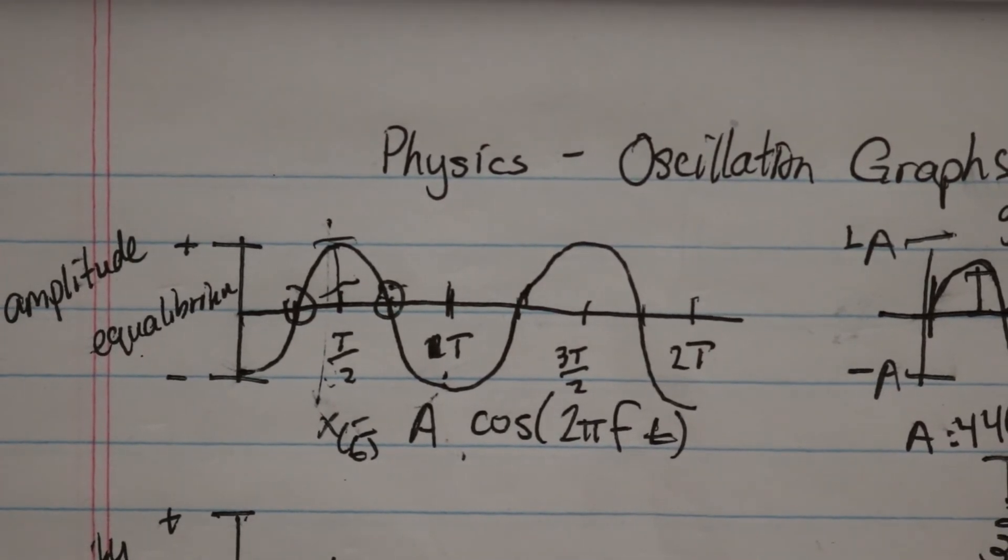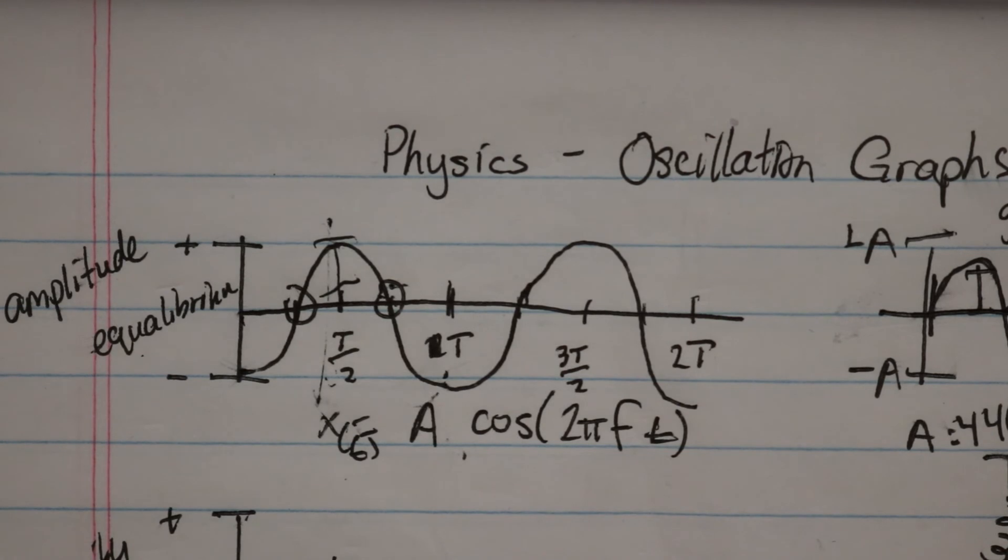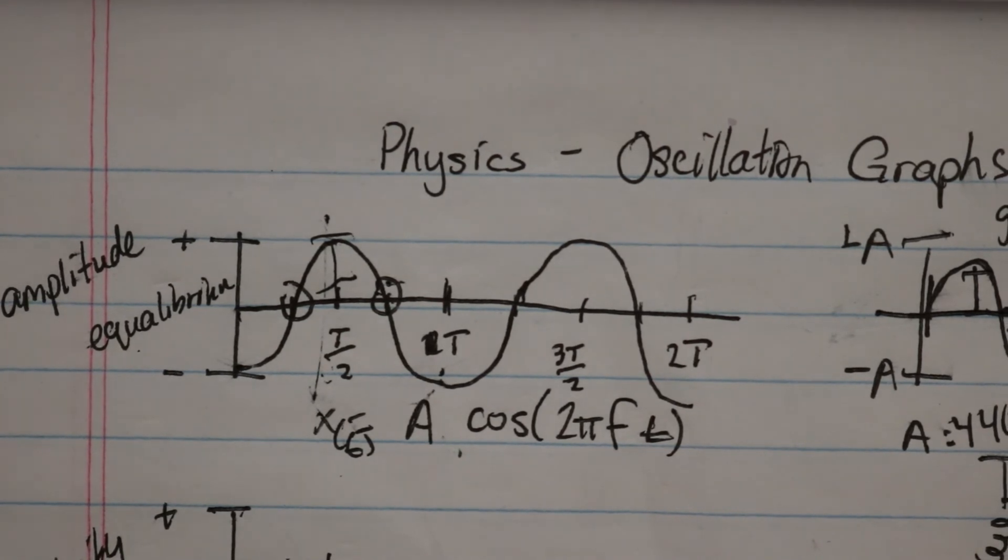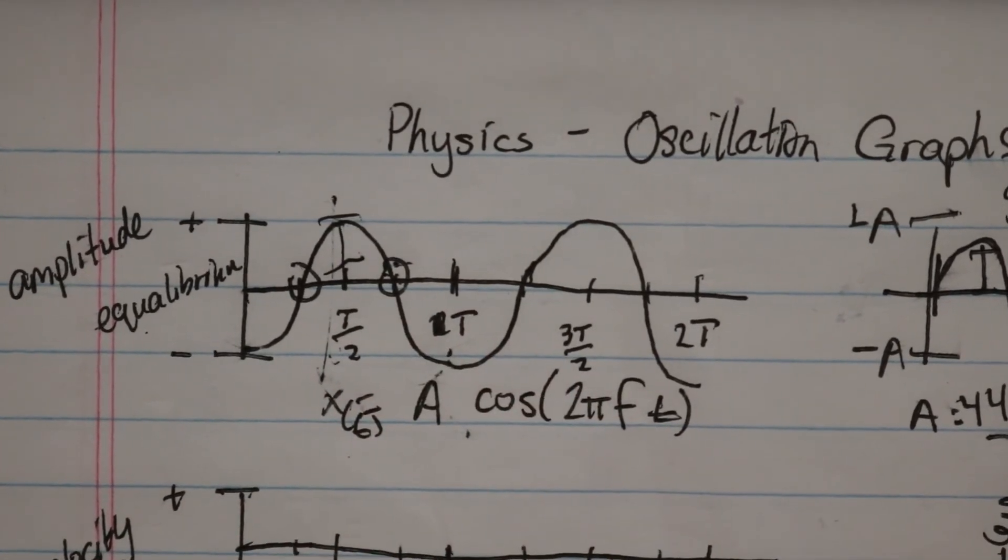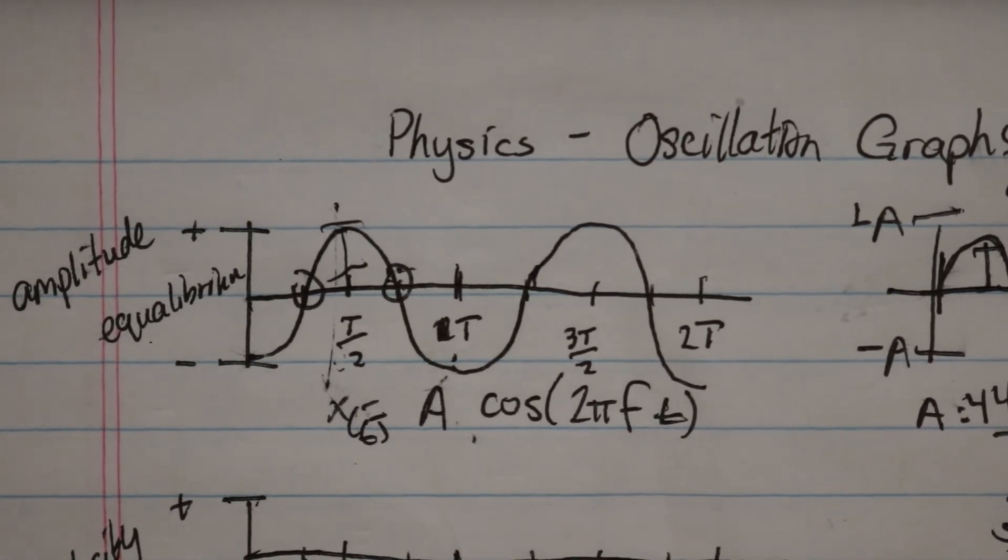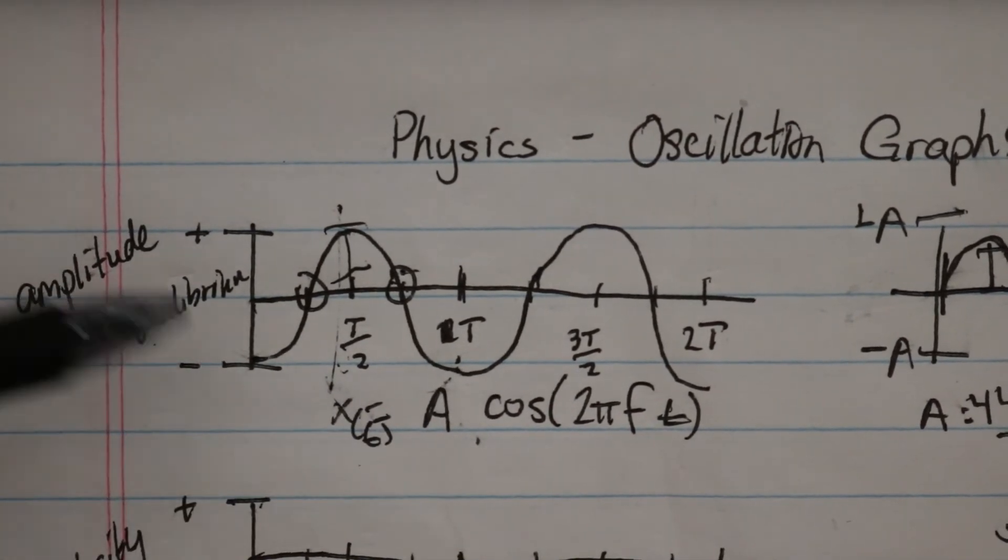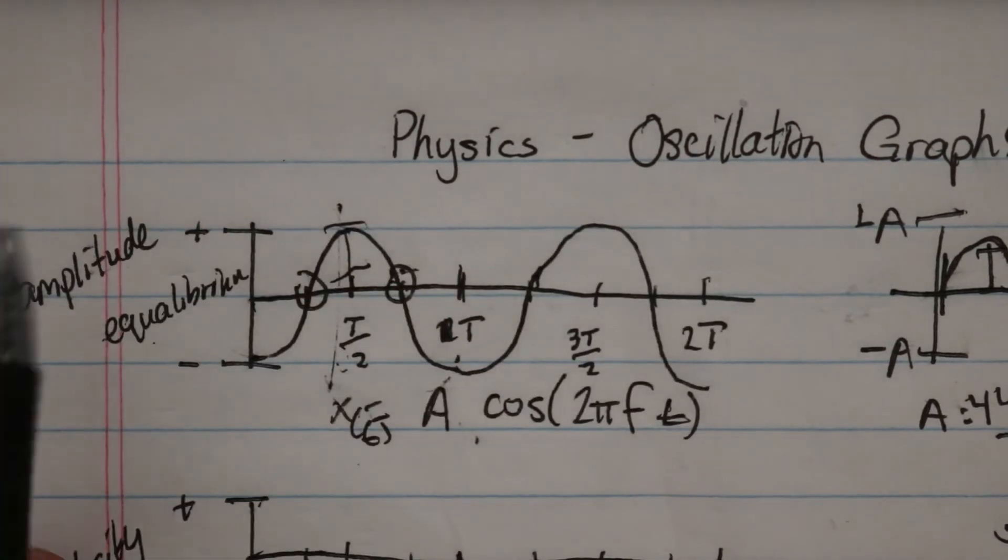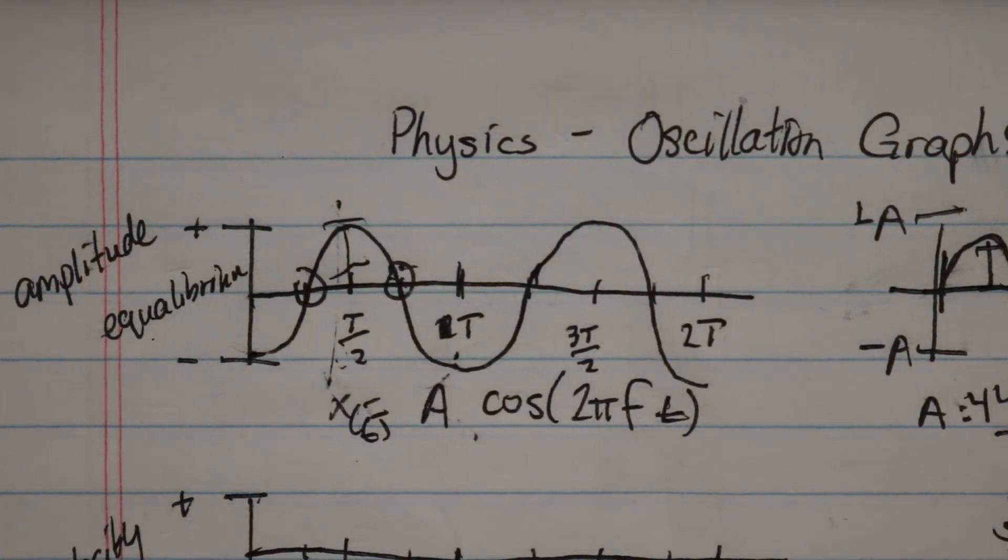But if you want to know at half a second and my period is this, what is it? Well, take your period, flip it over, plug in your frequency, and then plug in your time, plug in your amplitude, run it through your calculator, and you will get an x value, which will be the position or the amplitude where it is in that wave. So that's the amplitude graph.